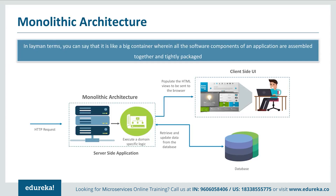Let's look at the client server model shown here. As a user, when you open a web UI, you just see a website. But behind the scenes, the server side application has different features which have to be handled together. Features such as handling HTTP requests, retrieving and updating the data from a database, and executing domain specific logic were put on a single framework. So if any one feature of this server side application had not worked, then the complete system would go down.